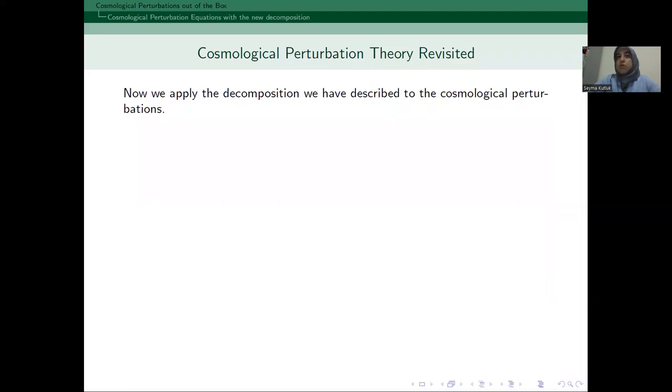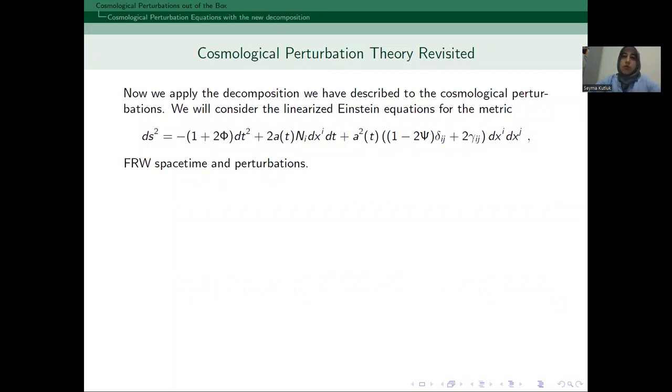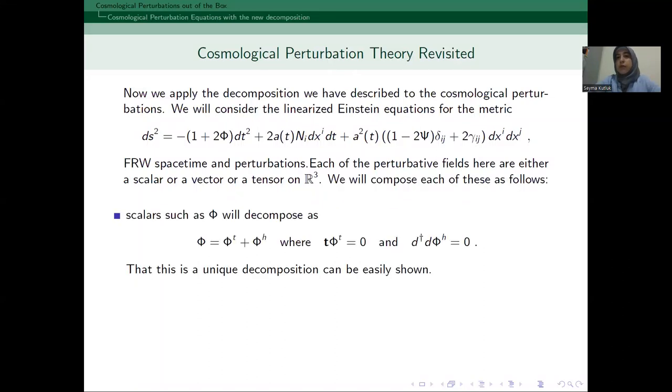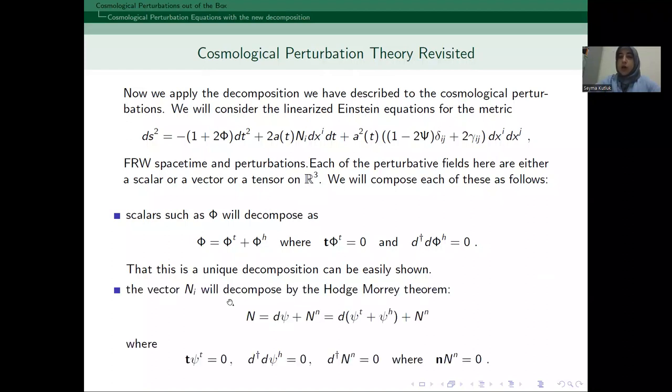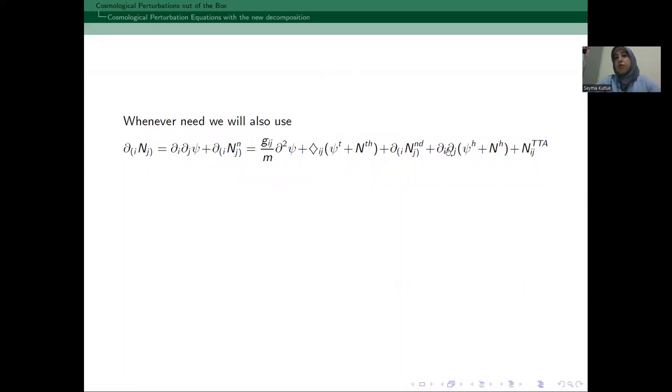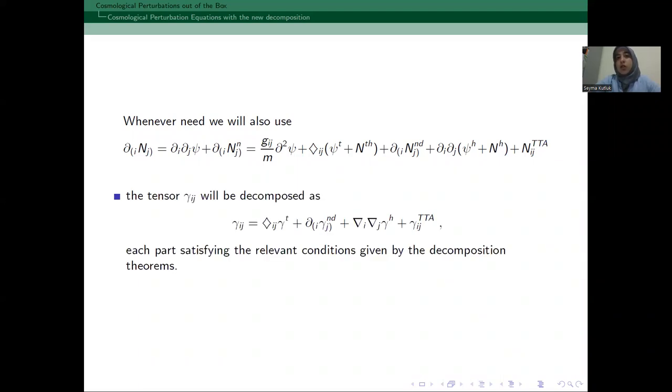Now, I apply all of these into cosmological perturbations. So, let me remind you what we do generally for cosmological perturbation theory. We have FRW spacetimes. And on top of it, we have some perturbations: Phi, N_i, Psi, and Gamma. Each of these are a scalar, a vector, or a tensor on R³. So, we will decompose each of these as this. Scalars will decompose into a T and H part. T has this boundary condition and H is harmonic. The N_i, I will decompose by the usual Hodge-Morrey theorem. But whenever I have this expression, I will use my further decomposition I described. So, this is what I showed you before. But now, the gradient parts are also added. And Gamma_ij will be decomposed as I have already told you, where I have this second decomposition also.